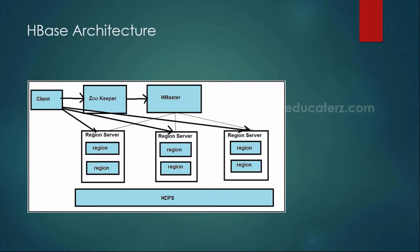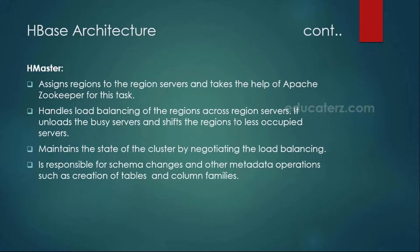Looking at the H Master — this is a master-slave architecture. The H Master is the master machine, a powerful machine, and we have multiple region servers which are the slaves. The master's responsibility is to assign regions to the appropriate region servers, and before assigning them it will talk to the ZooKeeper and take help from ZooKeeper.